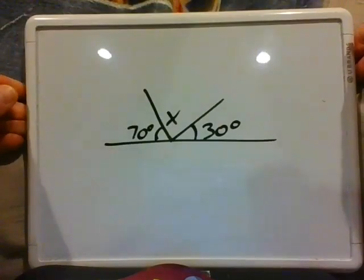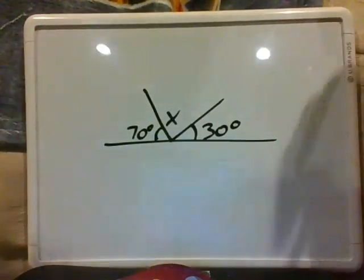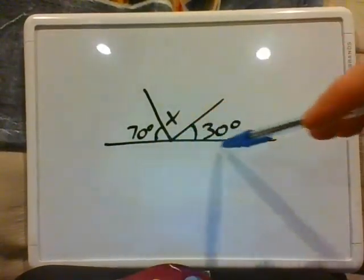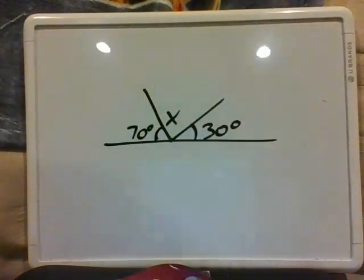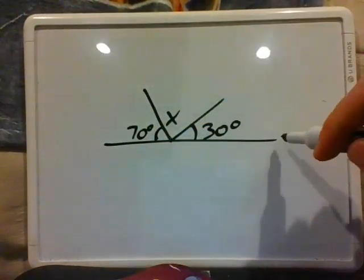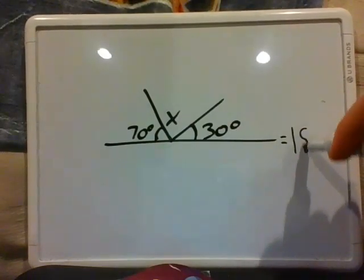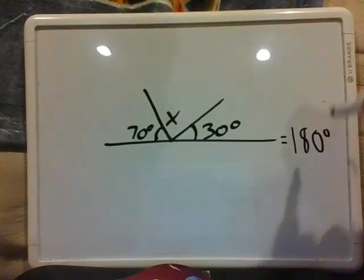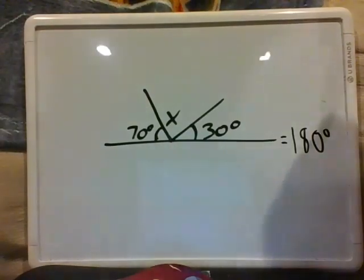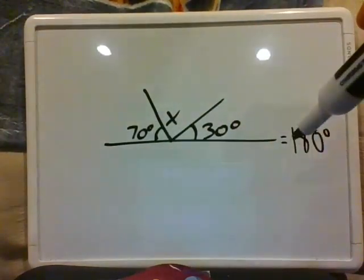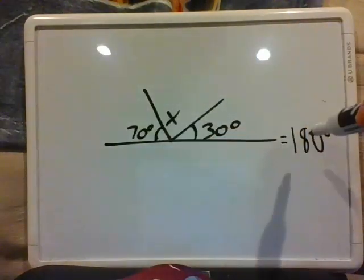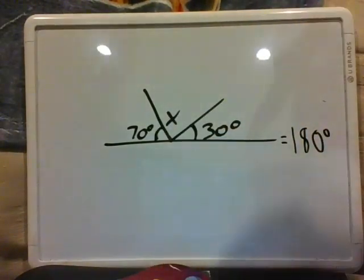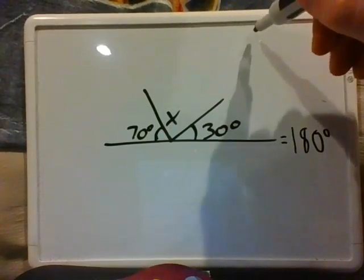So the first example here — as you can see — this line right here is supplementary because it is a straight line, so this is equal to 180 degrees. So if this whole thing is 180, all of these three added up equal 180. I can take 70 away from 180 and then 30 away from that, and that's going to equal what X is.